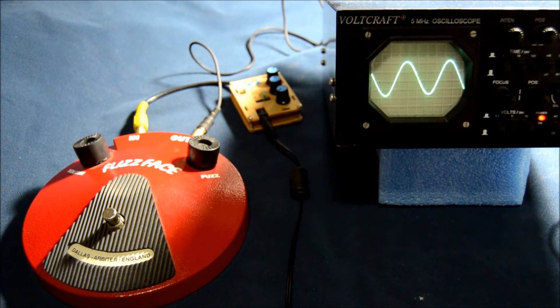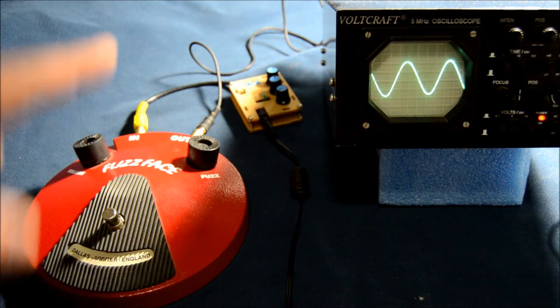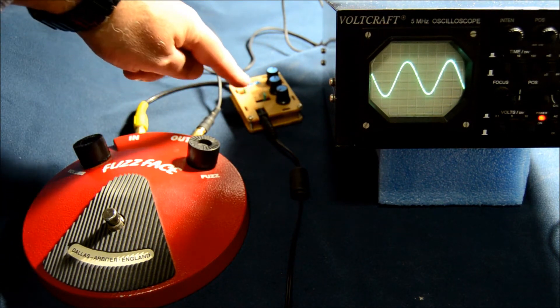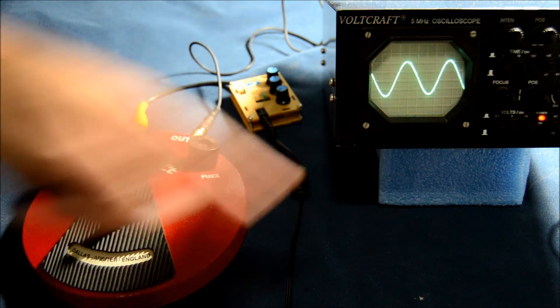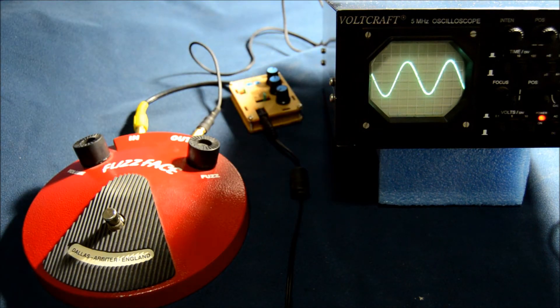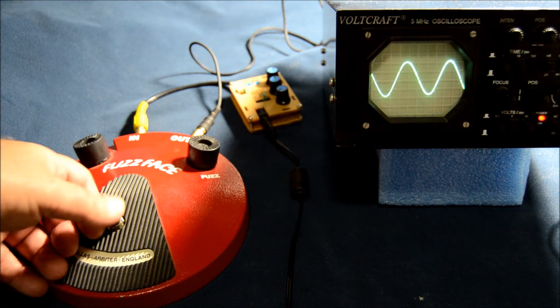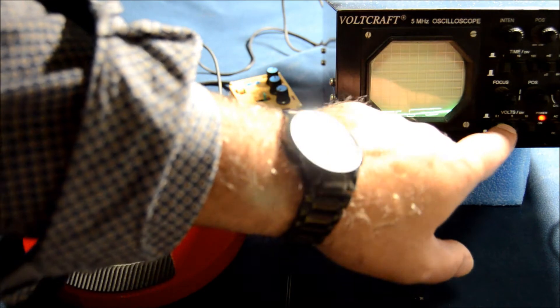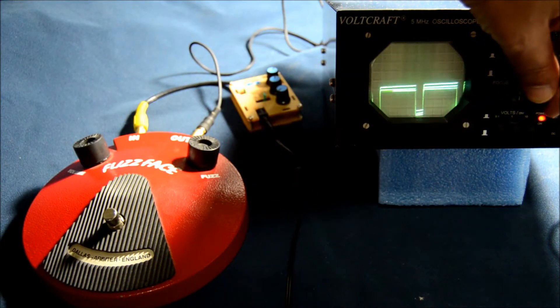Let's start with the fuzz face. We're sending, as always, a sine wave from this signal generator here into the pedal and into the oscilloscope. There's no buffer in this pedal, so if we turn it on, we have to adjust the oscilloscope because it's a different impedance.